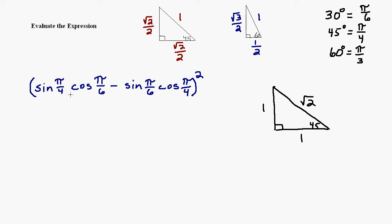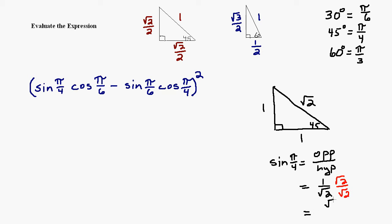Pi over 4 is 45 degrees. So the first thing I need to figure out is the sine of 45 degrees. Let's use the triangle with legs of 1. The sine of pi over 4, or 45 degrees — remember, sine is the side opposite divided by the hypotenuse. The side opposite is 1 and the hypotenuse is square root of 2. Usually we don't like to leave square roots in the denominator, so I'll rationalize by multiplying by square root 2 over square root 2. That gives me square root of 2 over the square root of 4, which is 2. So the sine of pi over 4 is square root of 2 over 2.